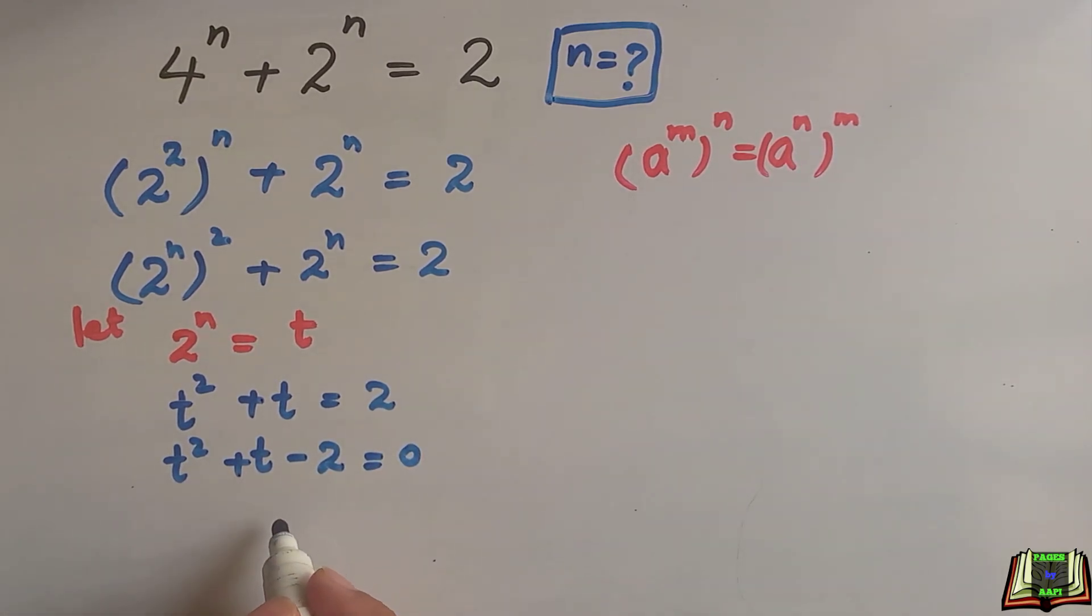This is a quadratic equation. So we are going to solve it by factorization method. We will make 2 factors that after multiplying end up with minus 2t square and after adding plus t.